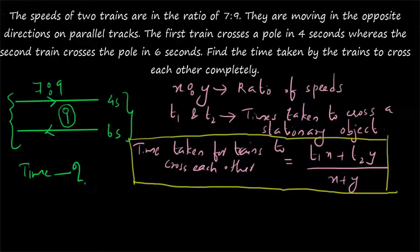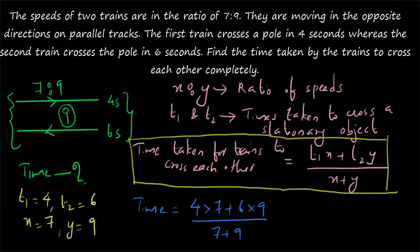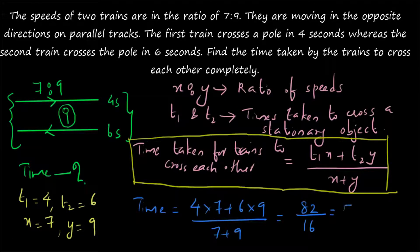Let us apply this formula. T1 = 4, T2 = 6, x = 7 and y = 9. So the time taken will be equal to (4×7 + 6×9) divided by (7+9). 7 plus 9 is 16; 4 sevens are 28 and 6 nines are 54. So 28 plus 54 is 82. Therefore the answer is 82 divided by 16 seconds, which equals 5 and 1/8 seconds.